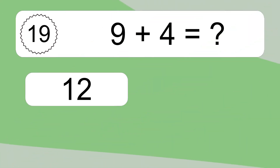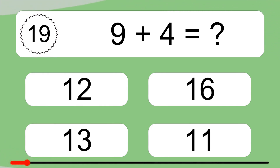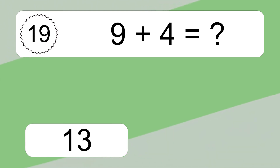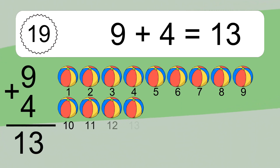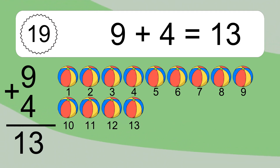9 plus 4 equals what? 9 plus 4 equals 13. Let's count it. 1, 2, 3, 4, 5, 6, 7, 8, 9, 10, 11, 12, 13.